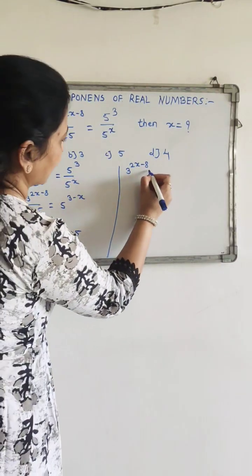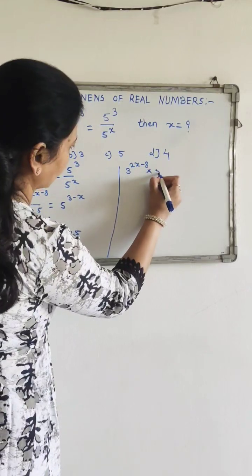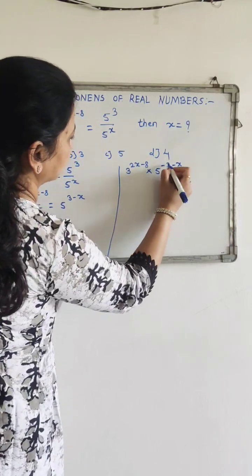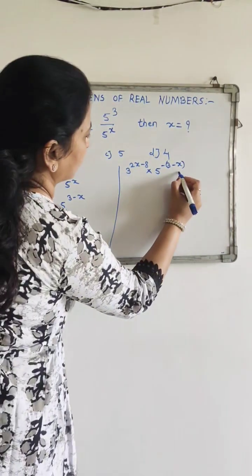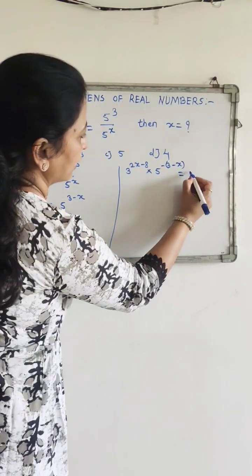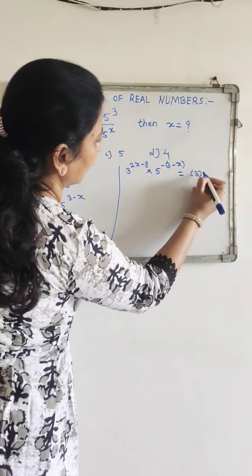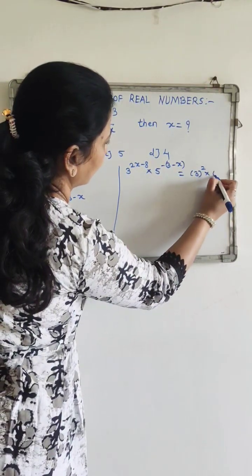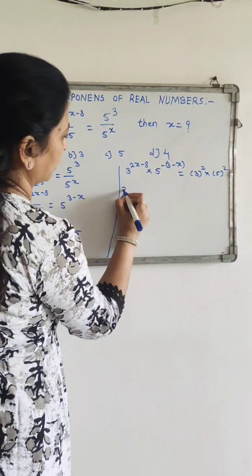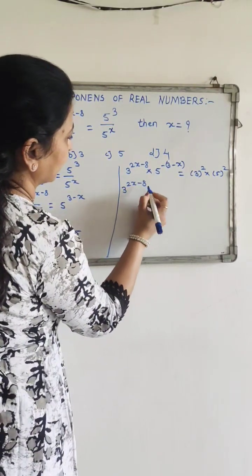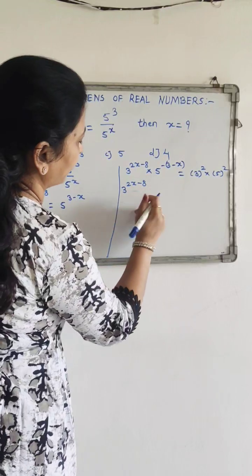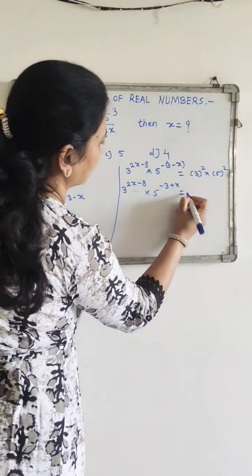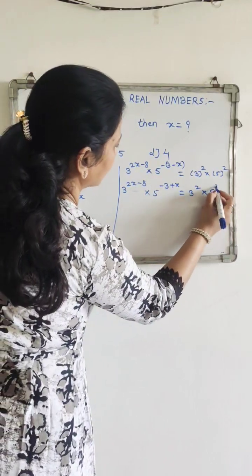Moving 5 raised to power 3 minus x to the right side gives a negative exponent: minus (3 minus x). And 225 is written as 3 squared multiplied by 5 squared. So 3 raised to power 2x minus 8 multiplied by 5 raised to power minus 3 plus x is equal to 3 raised to power 2 multiplied by 5 raised to power 2.